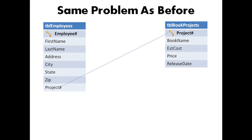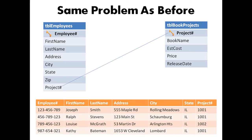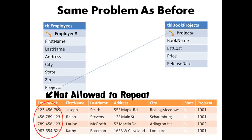And if we were to relate the tables the other way, joining the project number from TBL book projects to the employees table, we'll encounter the same problem as before — the employee number couldn't be repeated.